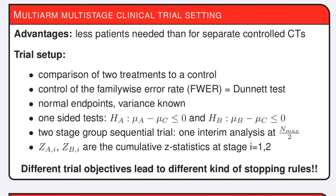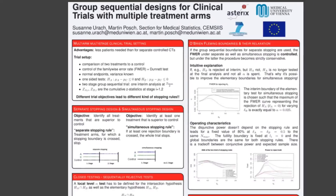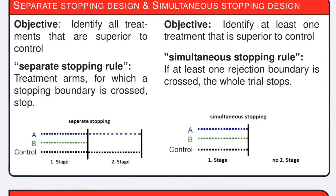How can we design such a trial? Which stopping rule should be used? We will see that this depends on the objective. We consider two different objectives: the objective to identify all treatments that are superior to control, and the objective to identify at least one treatment that is superior to control.